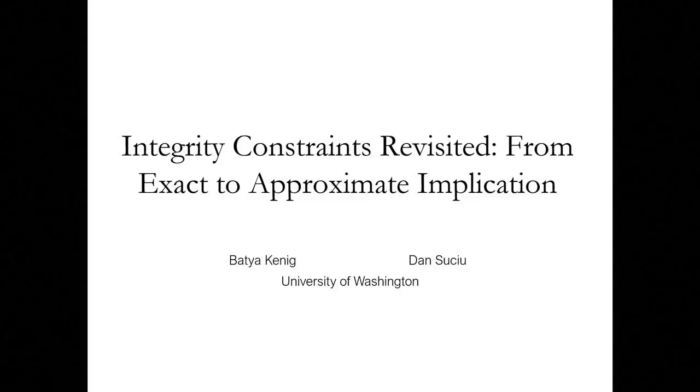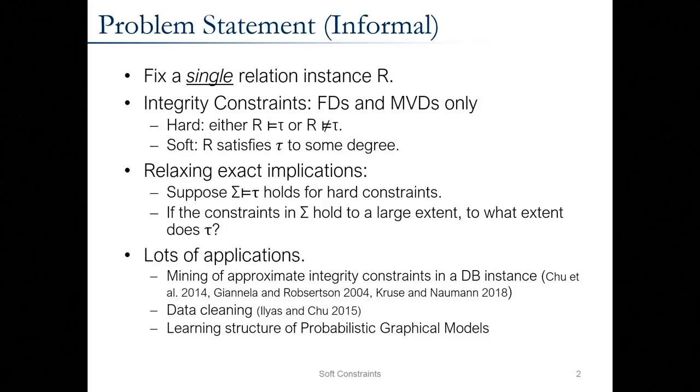Our next speaker is Batya Koenig from the University of Washington, talking about Integrity Constraints Revisited. This is joint work with Dan Suchu. We have a relation, and we know about integrity constraints — specifically functional dependencies and multi-value dependencies. Currently, either an integrity constraint holds in a relation or it does not — this is binary. But in real life, we can think about a relation almost meeting the conditions of an integrity constraint, or satisfying it to some degree.